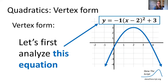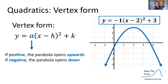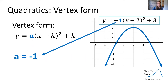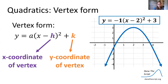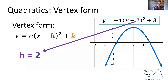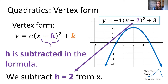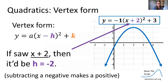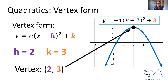Before we get into the Laffer curve, let's analyze this equation: y = −1(x − 2)² + 3. Our vertex form general formula is y = a(x − h)² + k. For a: if a is positive, the parabola opens upwards; if a is negative, the parabola opens downwards. In our example, a = −1, so the parabola opens downwards. Our h is the x-coordinate of the vertex and k is the y-coordinate. In our example, h = 2 — not negative two, because in our formula h is subtracted. If we saw (x + 2), then h would be −2, but since we see (x − 2), h equals positive two. And k = 3. So our vertex is (2, 3), which lines up with what we can see in our graph.